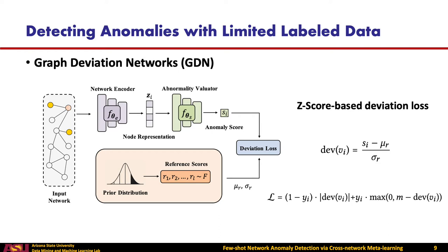It is worth mentioning that the network encoder is compatible with arbitrary GNN-based architecture, which can learn expressive node representations from the input network. The abnormality evaluator is built with two feed-forward layers that transform the hidden node representations to scalar anomaly scores. Specifically, Gaussian distribution is commonly a robust choice to fit the abnormality scores for a wide range of datasets. Based on this assumption, we first sample a set of anomaly scores from the Gaussian prior distribution, and each of which denotes the abnormality of a random normal node. The reference score is computed as the mean value of all the sampled scores. With the reference score, the deviation between the anomaly score of a node and the reference score can be defined in the form of a Z-score, and the parameters of Graph Deviation Networks will be updated according to the Z-score-based deviation loss.